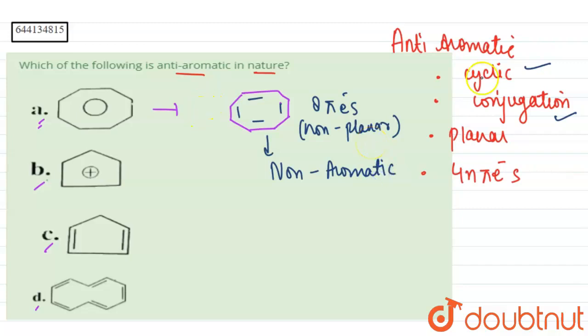It cannot be anti-aromatic because it is not planar. When we talk about our second compound, our second compound we see it has the following structure. As we can see it has four pi electrons, it has conjugation, it is cyclic, it is planar, and it has four pi electrons. That makes it anti-aromatic. It is anti-aromatic, it can be your answer.